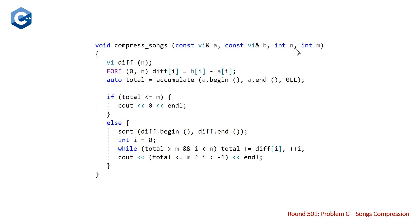We are also passing in n and m, our number of songs and our total number of bytes we can store in our flash drive. As previously mentioned, the first thing we're going to do is declare our vector of integers diff, then we are going to calculate the differences for each of the songs. So it's just going to be the difference between a and b.